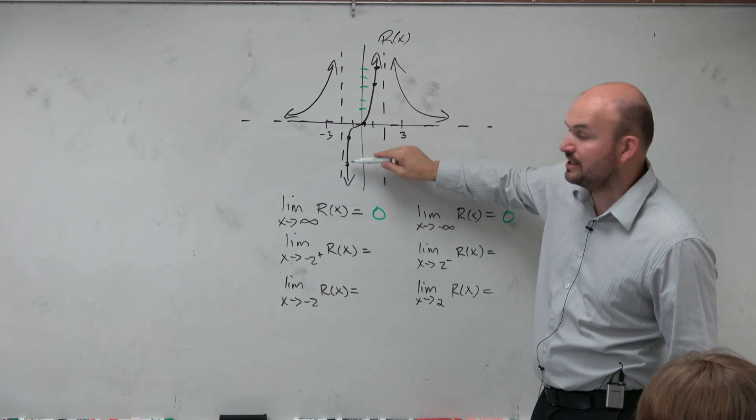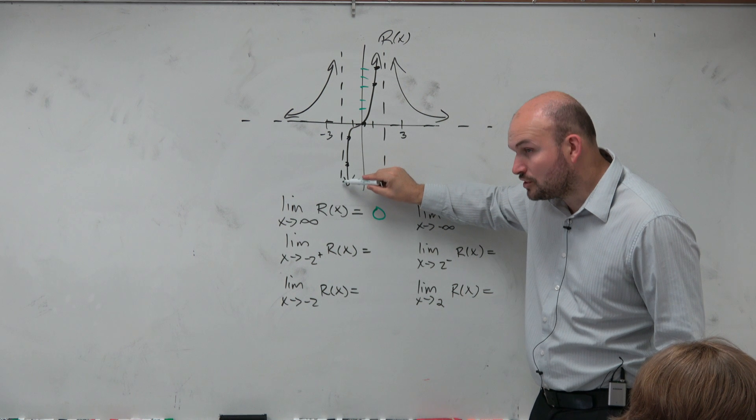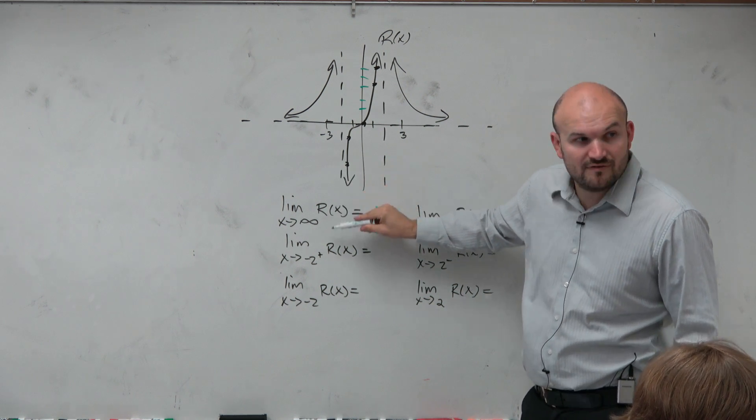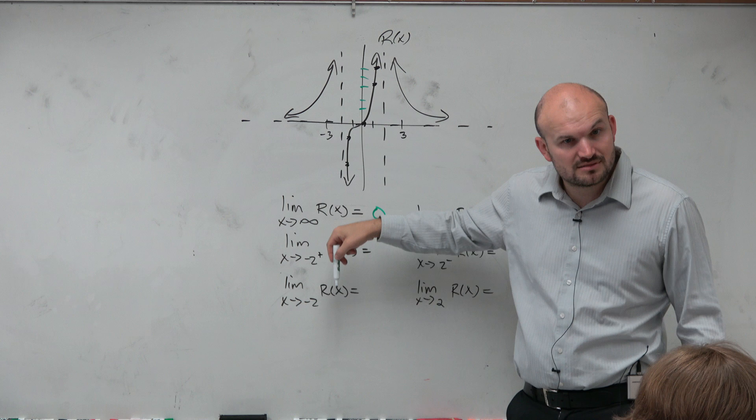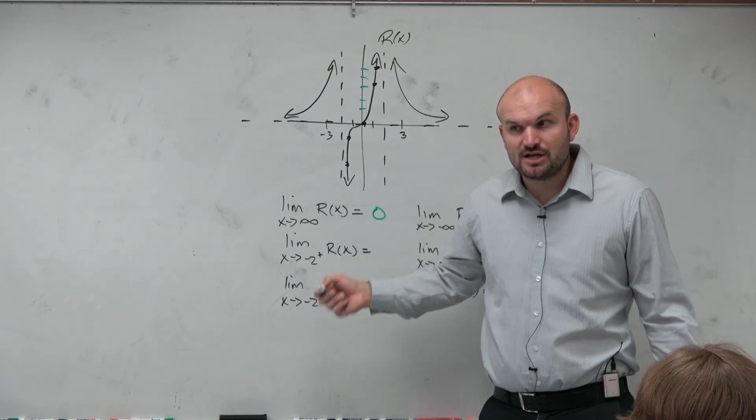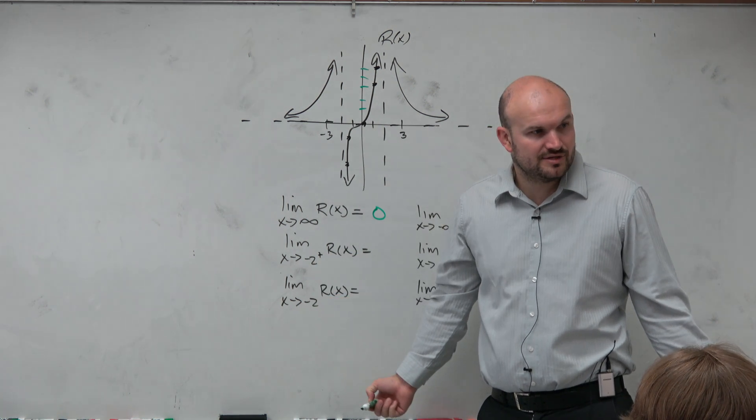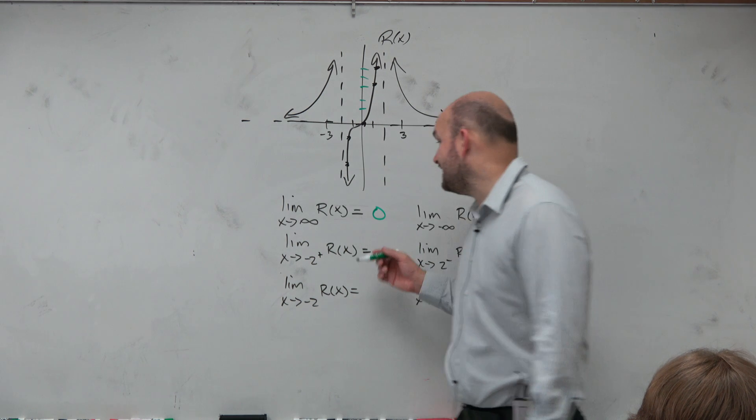Josh, r of x would be 4 right here. As I keep on getting closer and closer to negative 2, r of x is going to keep on getting smaller and smaller, right? What is r of x all the way going to? Negative infinity.